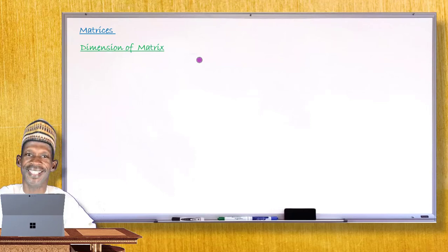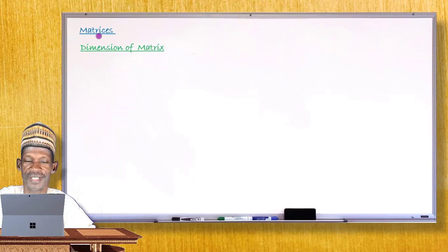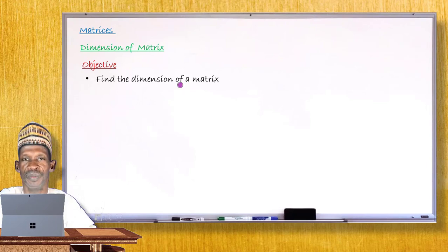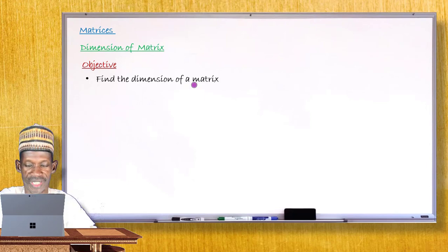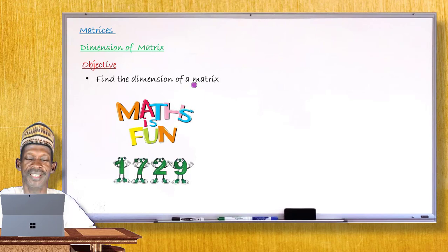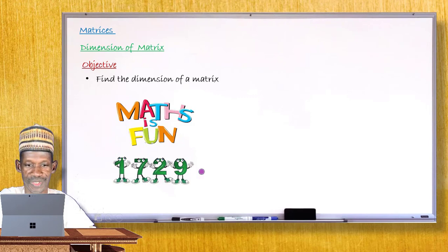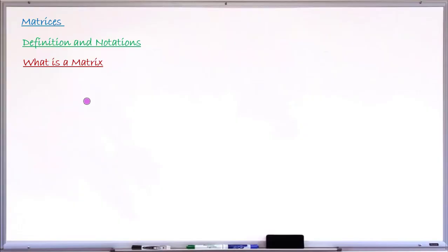Hello, my dear student, welcome to another edition of your mathematics lesson. Today we are going to take another new interesting topic — that is matrices. What you are going to learn first in this topic is how to find the dimension of a matrix. I will give you an interesting number: 1729. This number is very, very special and unique. I will tell you what is special about it after completing the lesson today, so don't go away.